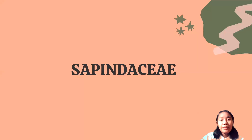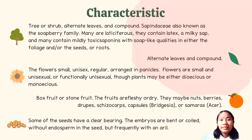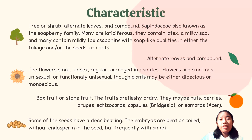The second family is Sapindaceae. Sapindaceae has the characteristic of trees or shrubs with alternate and compound leaves. Sapindaceae is also known as the soapberry family. Many are in laticifers forests; they contain latex, a milky sap, and many contain toxic saponins with soap-like qualities in either the foliage, bark, seeds, or roots.